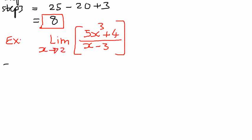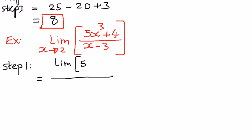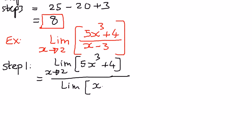In here, to solve this limit, we're going to break it down into different steps. Since it belongs to the quotient of a limit operation, we're going to write this one out as follows: the limit of the numerator part, which is 5x³ + 4, as x approaches 2, divided by the limit of the denominator function, x - 3, as x approaches 2.